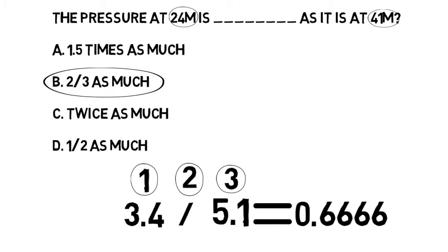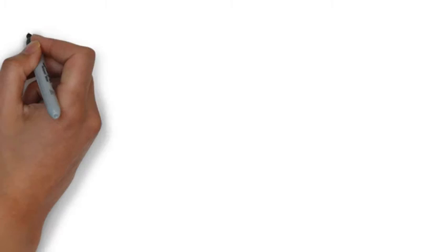So it is two thirds as much pressure, or two thirds of the pressure at 24 meters compared to 41 meters. Correct answer is B.